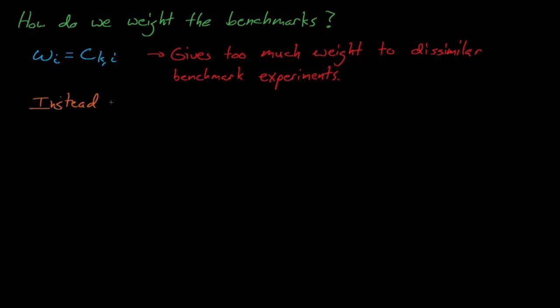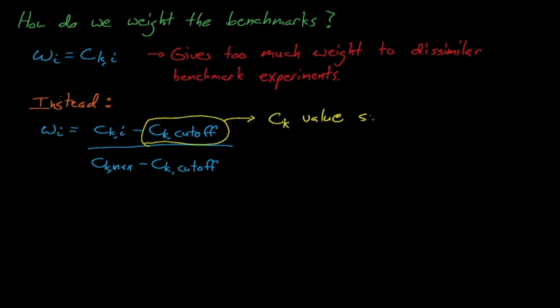Instead, whisper uses this equation to calculate its benchmark weights, where c sub k of i is the c sub k for each i benchmark case, where c sub k max is the maximum c sub k present between the benchmarks in our target application, and c sub k cutoff is the c sub k cutoff for the benchmarks that we decide to include in the whisper calculation.